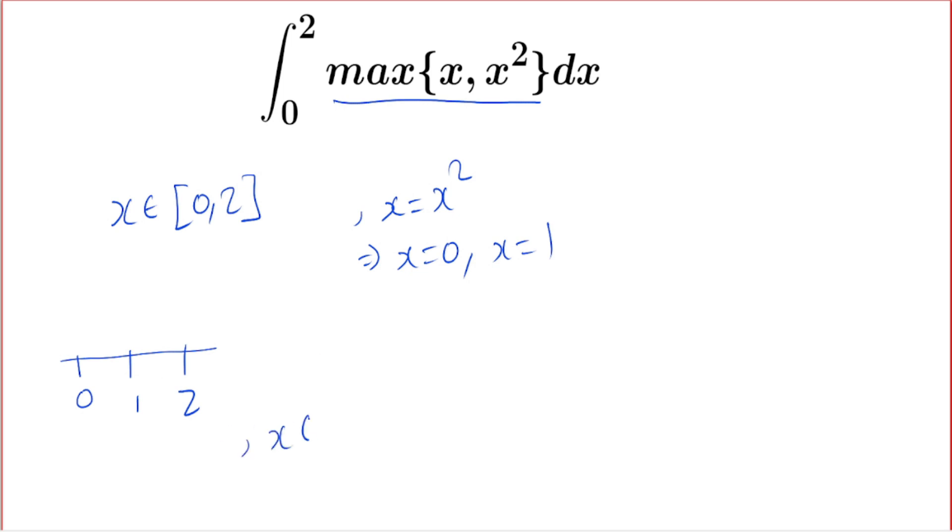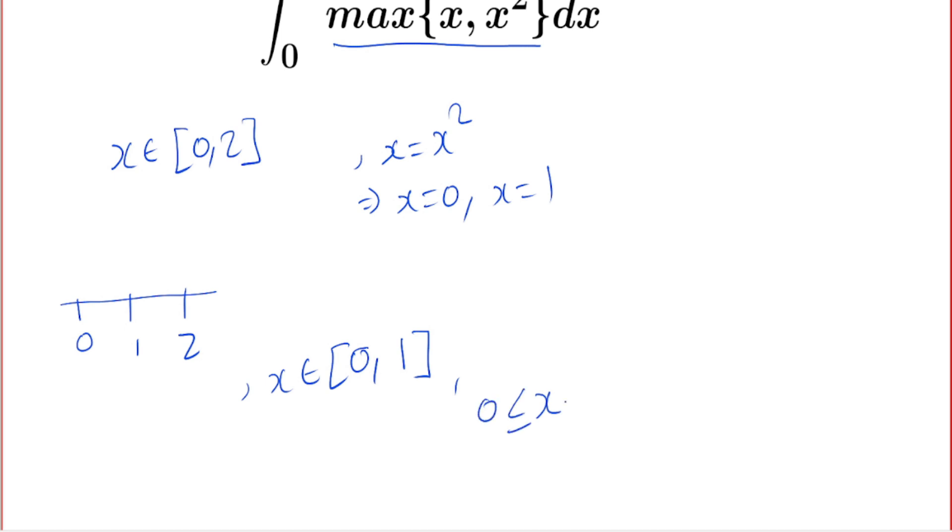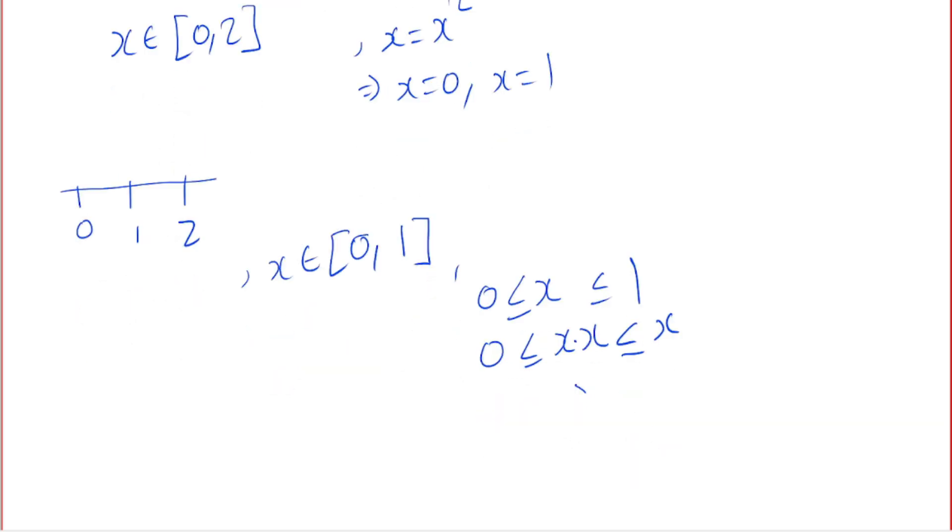Let's consider case one when x lies between zero to one. So x lies between zero to one, so we can multiply it by x because x is a positive number, so it is not going to affect the inequality. From here we get x squared is smaller than x.